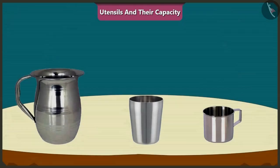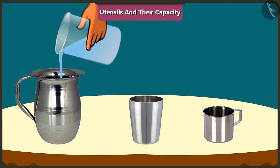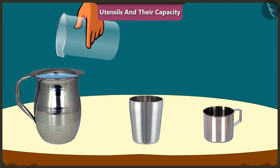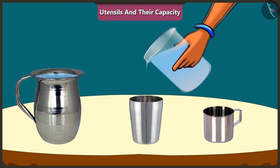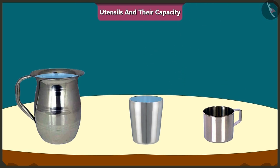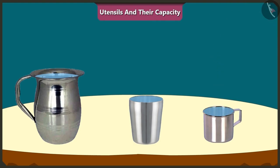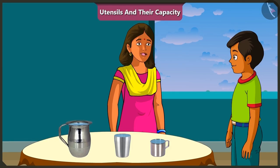How is that? Come on, let me explain it to you. See, I will pour water in this jug, in this glass, and in this mug. The amount of water that can fill each of these vessels respectively is called its capacity.